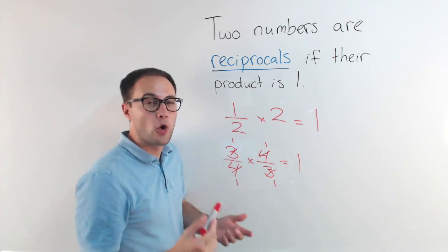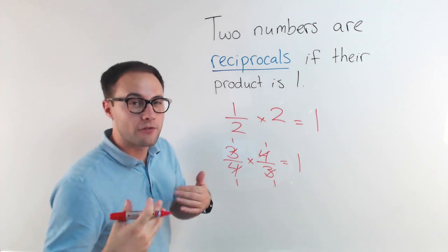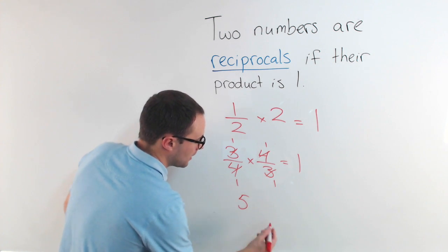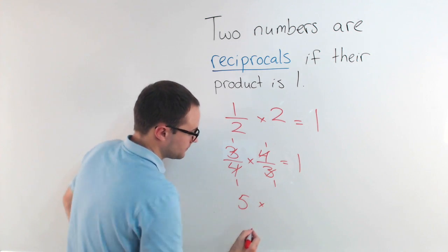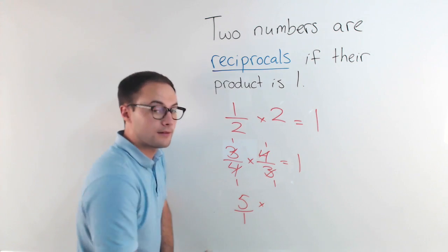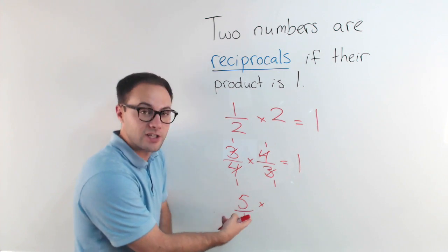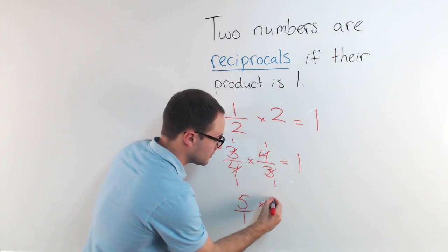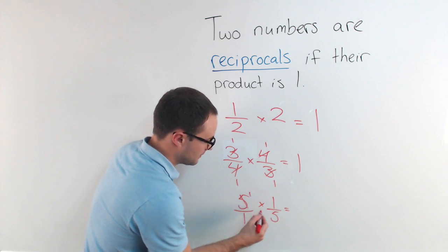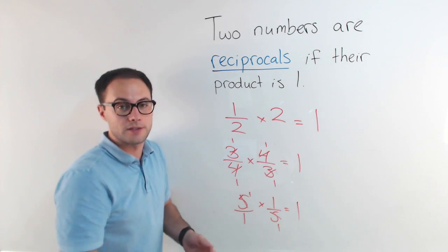If you have a whole number, make sure you write it as a fraction — that's going to help. For example, if you're talking about five and you're wondering what its reciprocal is, make that over one: five over one. Then you know to just flip it. So five times one-fifth — those fives simplify, and you get one. So five and one-fifth are reciprocals.